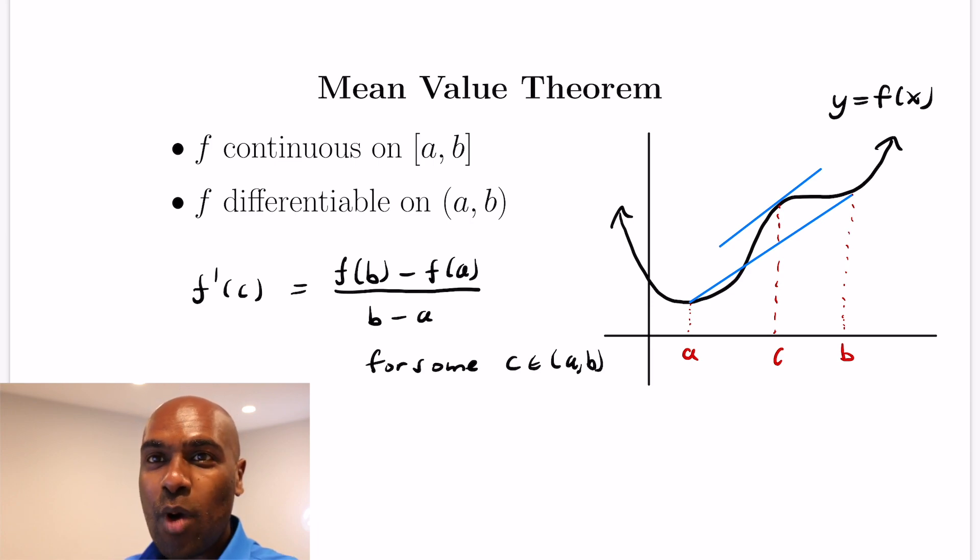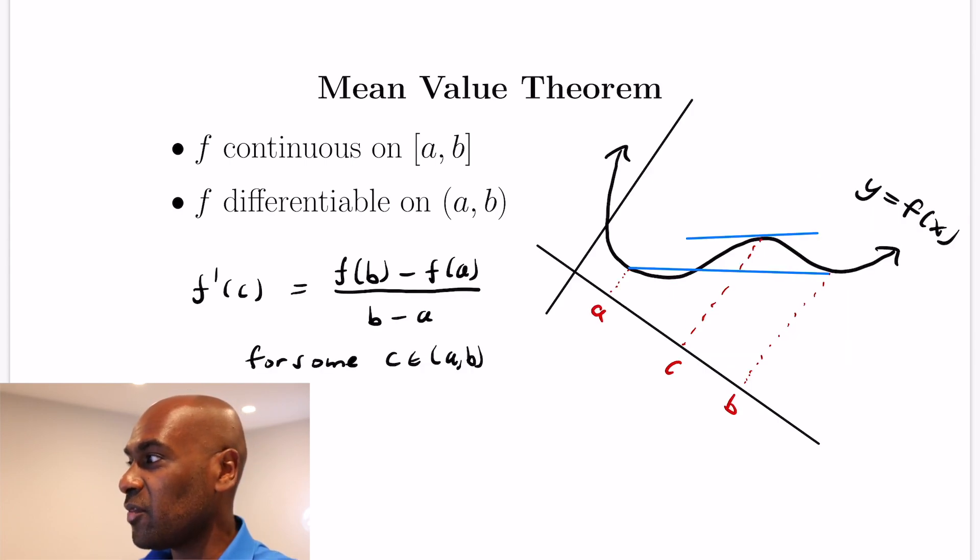Now you might ask yourself, why does this theorem actually even hold in the first place? And a way to see it is to change your frame of reference and prove what's called Rolle's theorem, where we sort of rotate the picture in a certain way, like this, so that a and b's function values are the same.